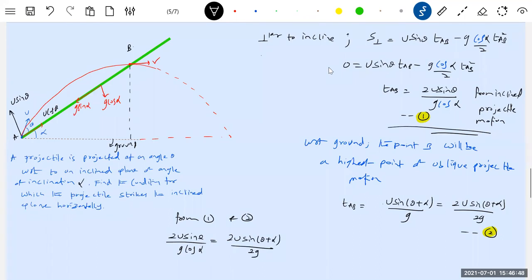Finally, the answer will be: two sine theta is equal to sine of theta plus alpha divided by cos alpha. That's the condition.